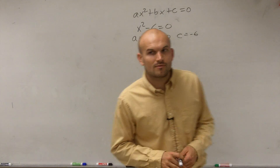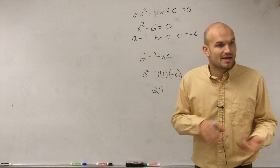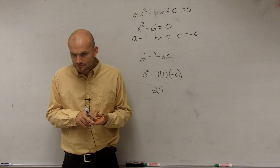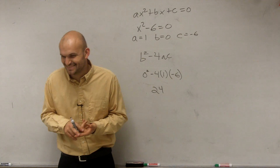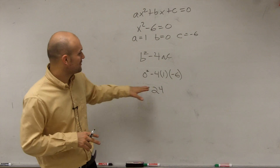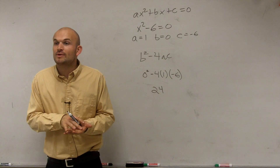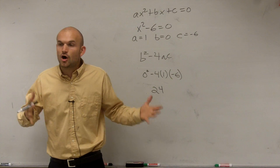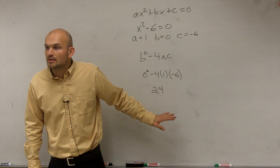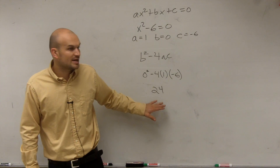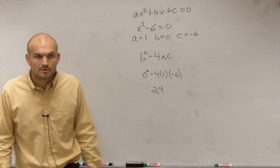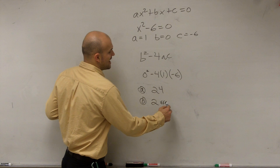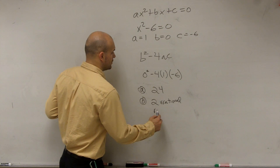So if we get 24, one thing we need to look at is: is it positive or negative? Since it's positive, we're going to have two real roots. Now we also need to determine whether they're going to be two rational roots or two irrational roots, and that depends on whether the number is a perfect square. Is 24 a perfect square? No. So since 24 is not a perfect square, we know we're going to have two irrational real roots.